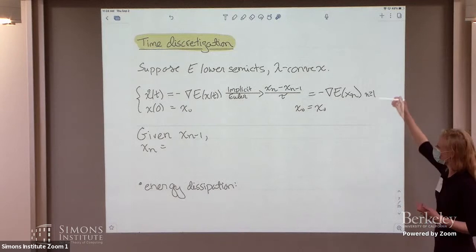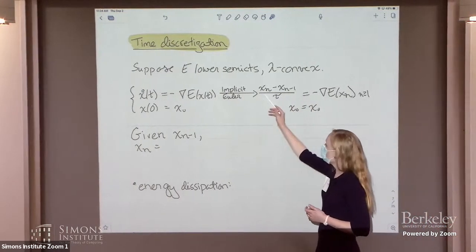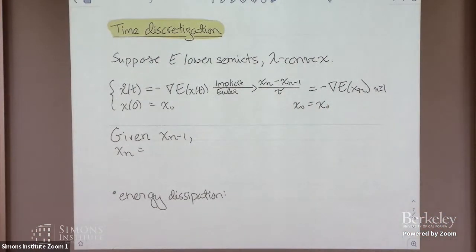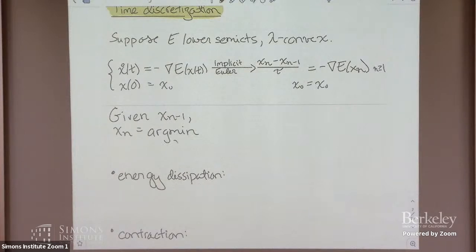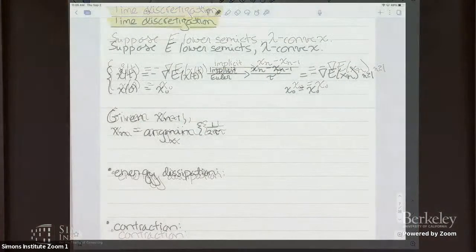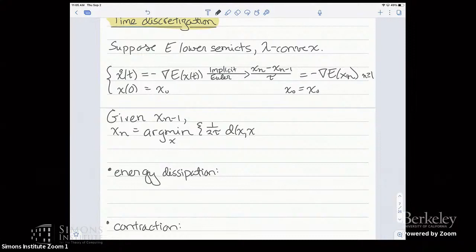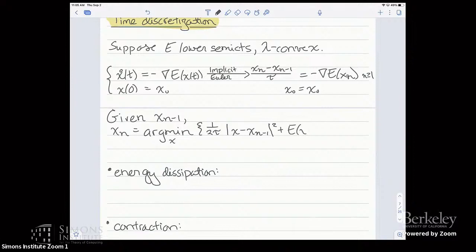Given the (n minus 1)-th element of the scheme, how do you find the n-th element satisfying that equation? This is something people in optimization know very well. Under the assumptions we have on the energy, a natural thing to do is to look for the minimizer of a new function: the square distance from x to x of n minus one, scaled by one over two tau, plus the energy.